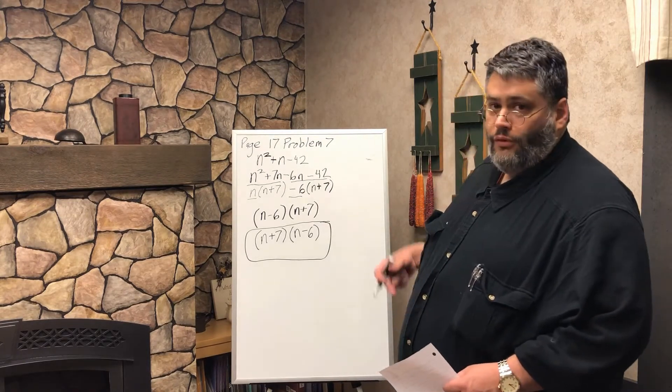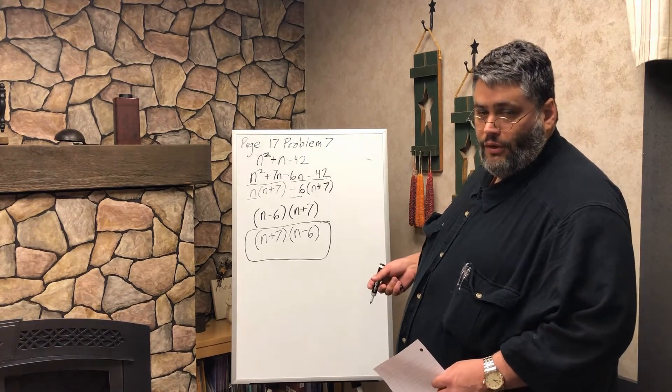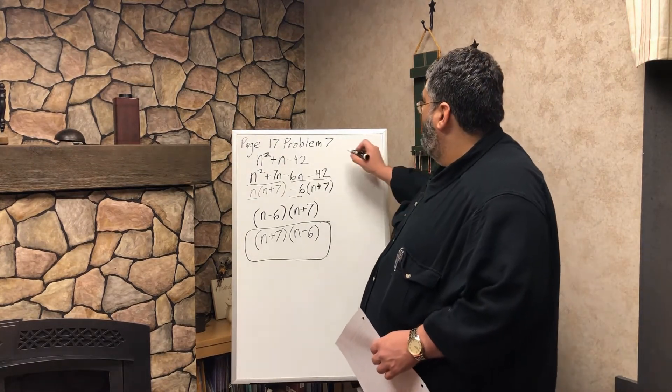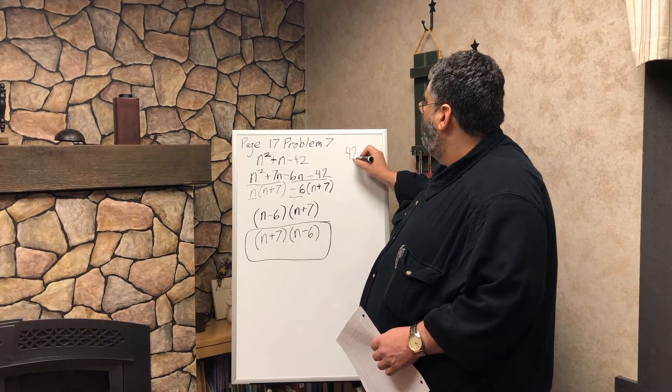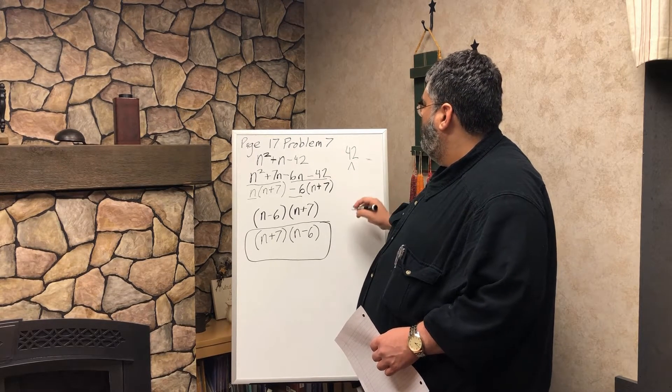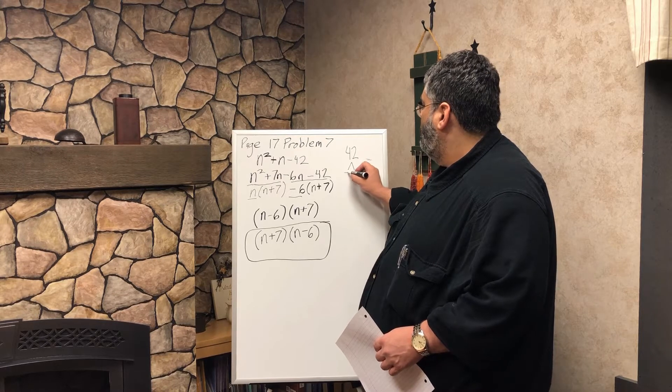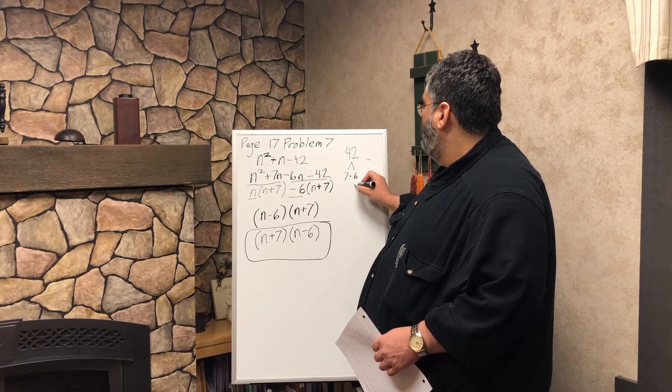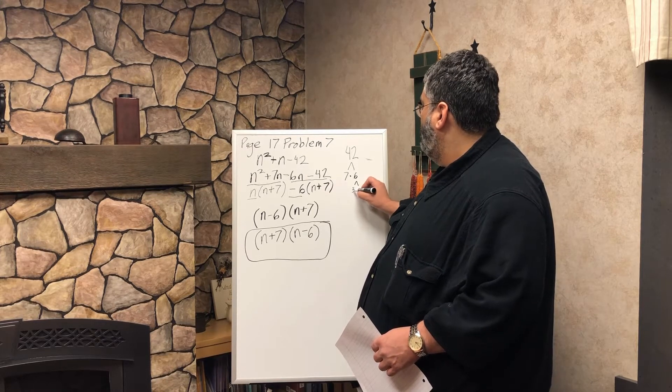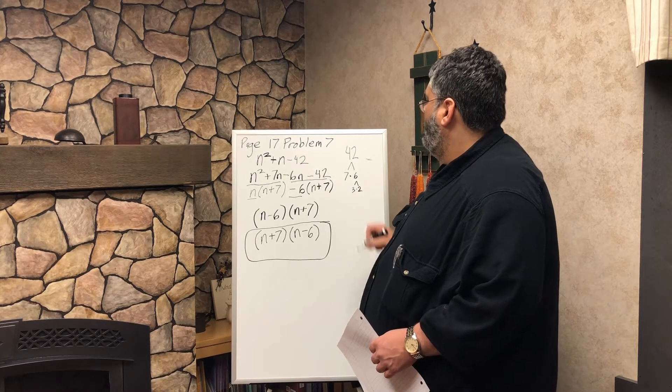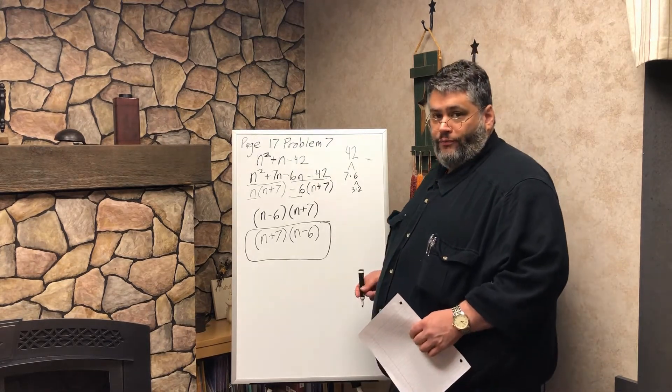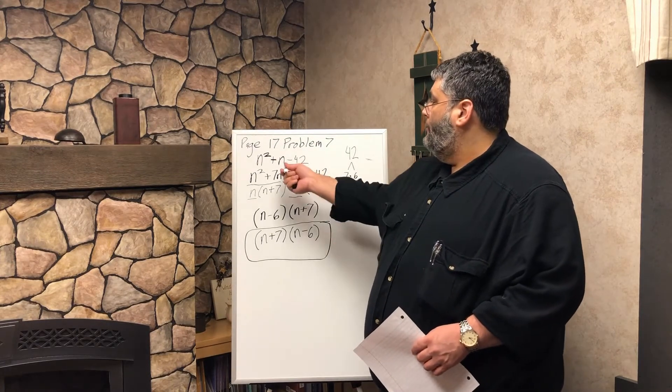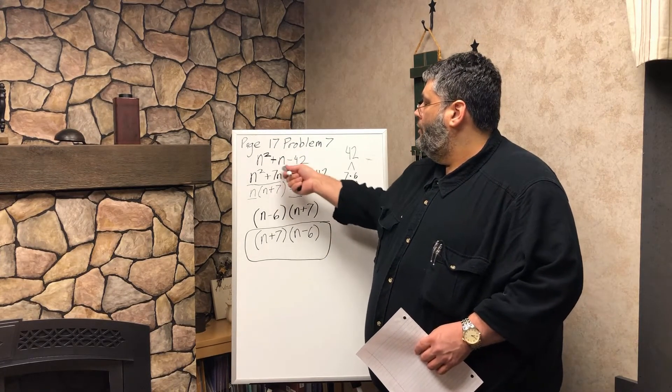So we're going to ask ourselves some of those things and are those factors helpful? So just to show you here like how I did it in my head and I worked this out previously. But how I did it here is I looked at the 42 and then I factored it here. So I saw that 42 is 7 times 6, and then 6 is 3 times 2.